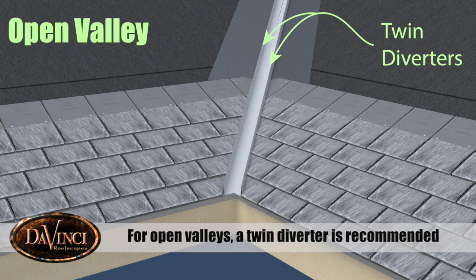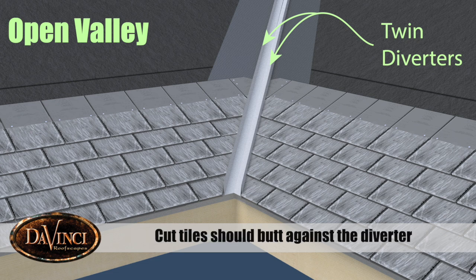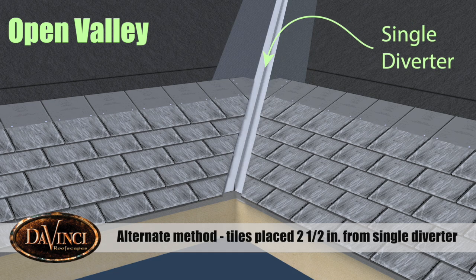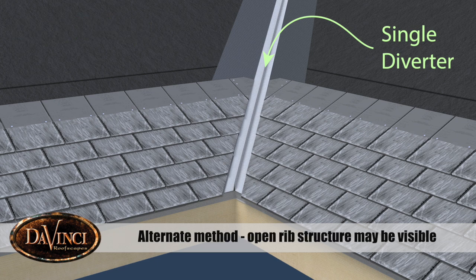For open valleys, a double W or twin diverter is recommended. Tiles are butted against outside diverters when a twin diverter is used. An alternate method is to place tiles up to 2.5 inches from the center of a single diverter.